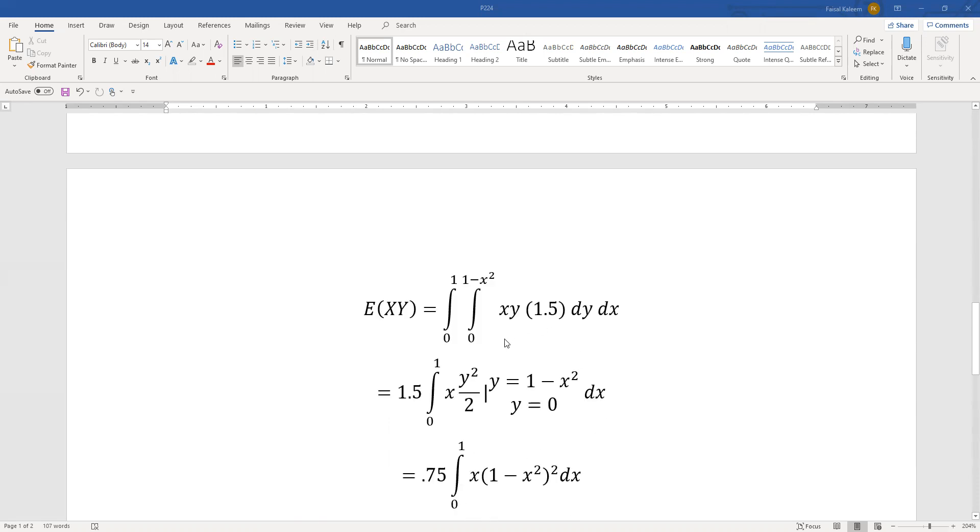So xy times the pdf 1.5, y goes from 0 to 1 minus x squared, x goes from 0 to 1. 1.5 can be pulled out. x is a constant when you integrate with respect to y, you get y squared by 2.